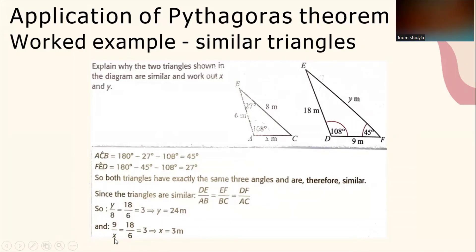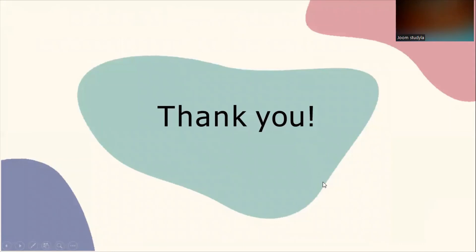To find the value of X: 9/X = 18/6. Cross-multiplying: 9 × 6 = 54 and 18X, so X = 54/18 = 3 meters. That's all for this topic. Remember, practice makes you perfect. Please make practice so that you improve!